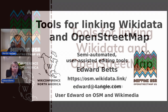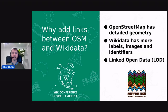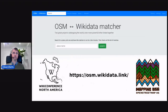I'm Medved Berts and I've built some tools for linking Wikidata and OpenStreetMap, which I'm going to talk about. So why add links? OpenStreetMap has detailed geometry, whereas Wikidata has more labels, images, and identifiers. And it's all about the linked open data, which is very fashionable these days.